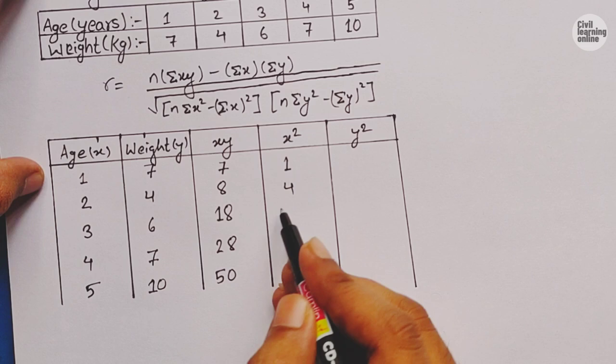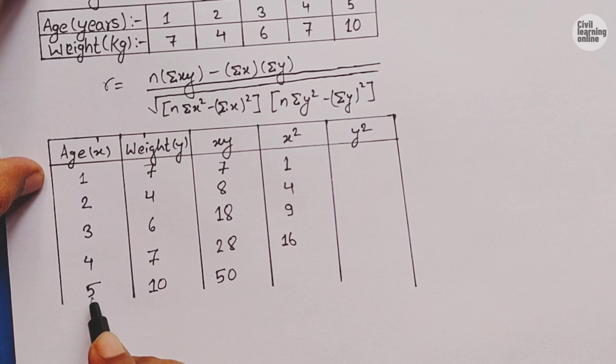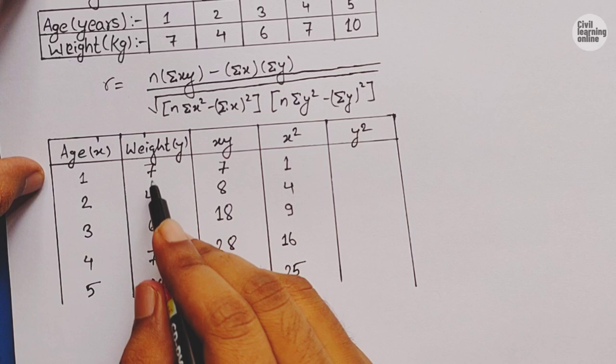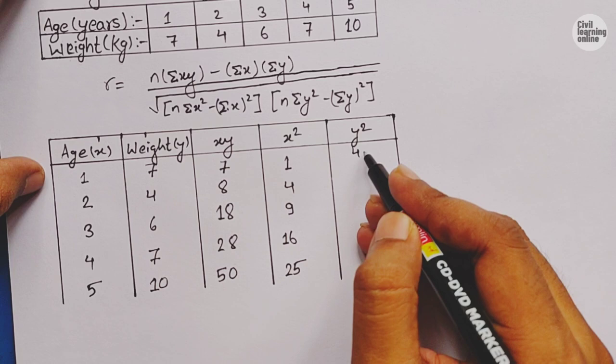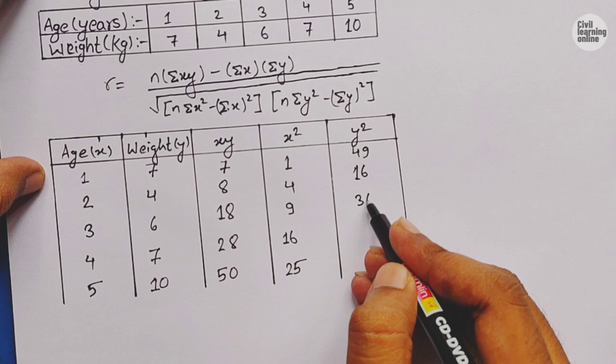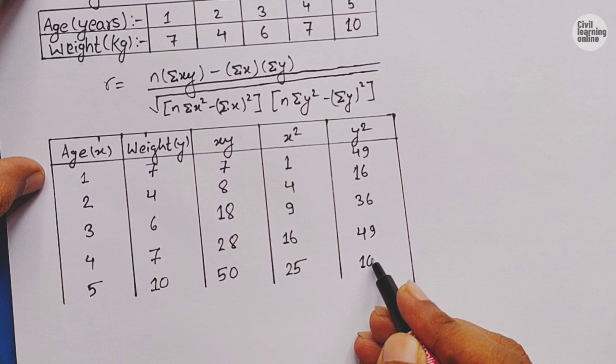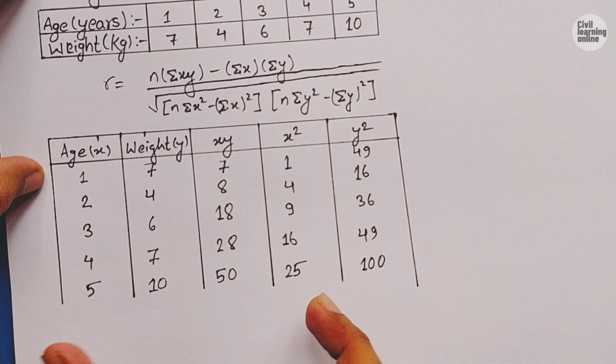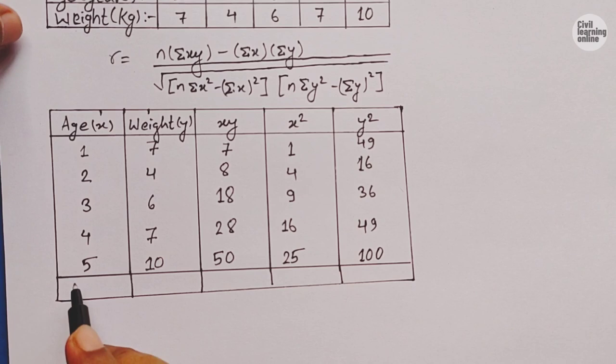Now we calculate x². The x values squared are: 1²=1, 2²=4, 3²=9, 4²=16, and 5²=25. Then for y²: 7²=49, 4²=16, 6²=36, 7²=49, and 10²=100. We now create a summation row at the bottom of the table to find the total of each column.